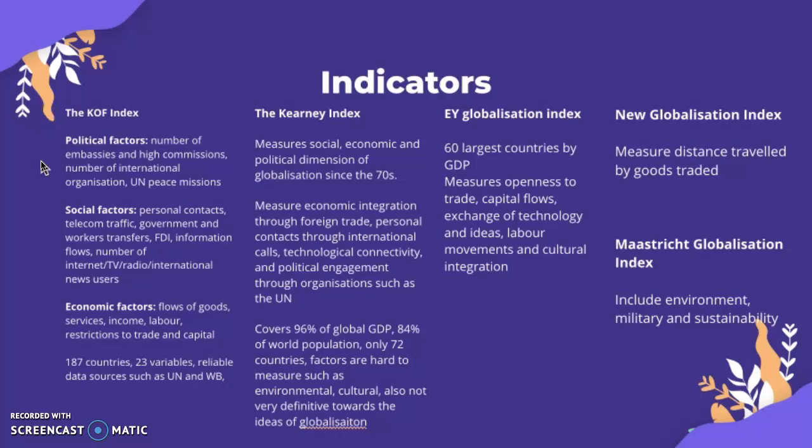The KOF Index measures globalization politically in terms of the number of embassies and high commissions, international organizations, and peace missions. Socially, it measures personal international contacts, telecom traffic, government and worker transfers, foreign direct investment, information flows, and the number of internet, TV, radio, and international news users. Economically, it measures the flow of goods, services, income, labor, restrictions to trade, and capital such as protectionism. It covers 187 countries, has 23 variables, and draws on reliable data sources such as the UN and World Bank.